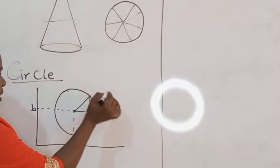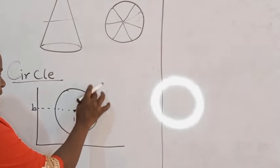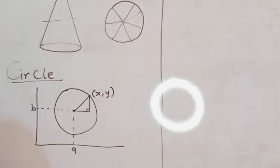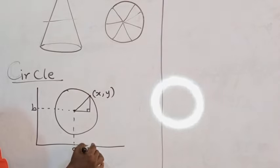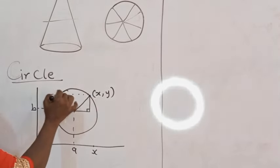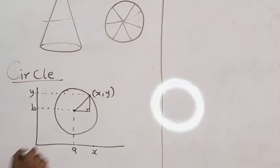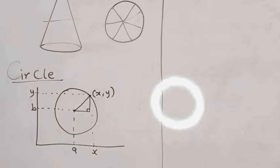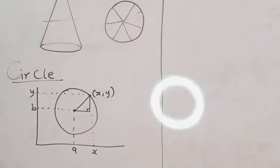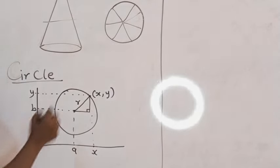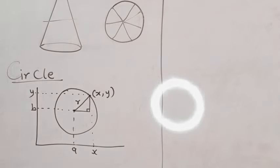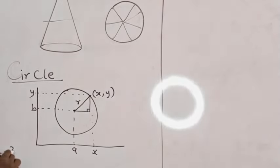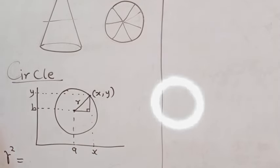Let this point on the circle be represented as (x, y). We have that x is here and y is here. So, by the Pythagorean theorem, remember that r squared is equal to the sum of the squares of the two other sides.